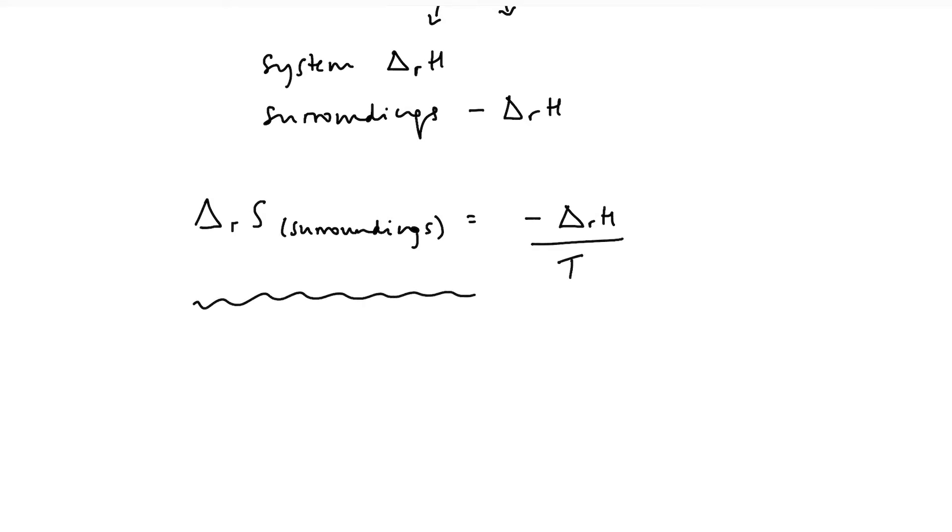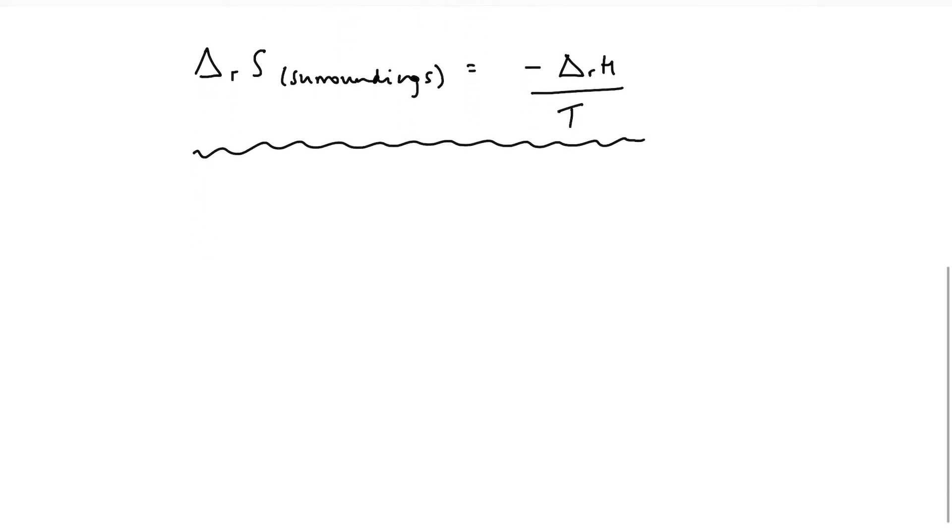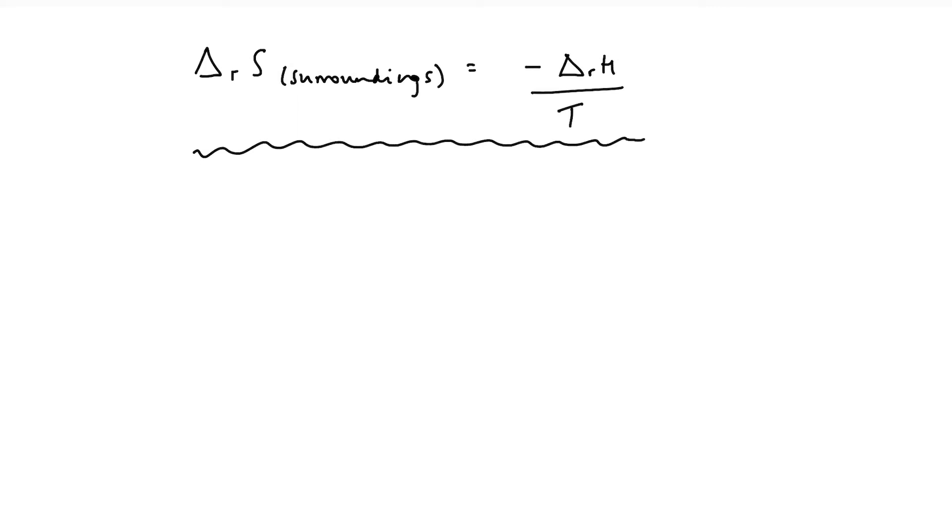The entropy change of the surroundings is equal to minus the heat change divided by the temperature. This allows us to look at the entropy changes to the surroundings from the point of view of the system, which is where Gibbs energy comes in. Gibbs energy is a convenient way of applying the second law of thermodynamics, considering only the properties of the system, and it combines changes in enthalpy with changes in entropy.